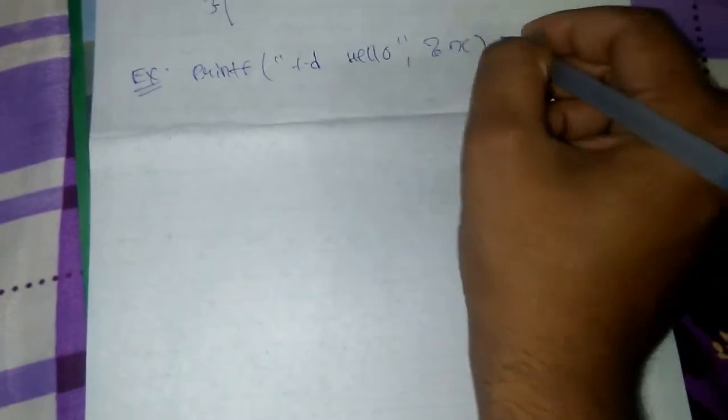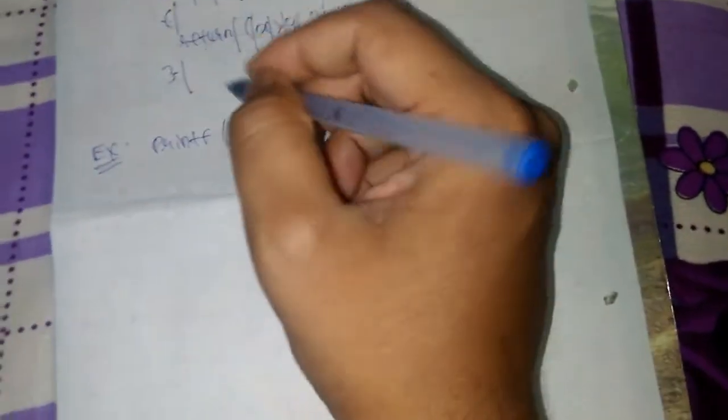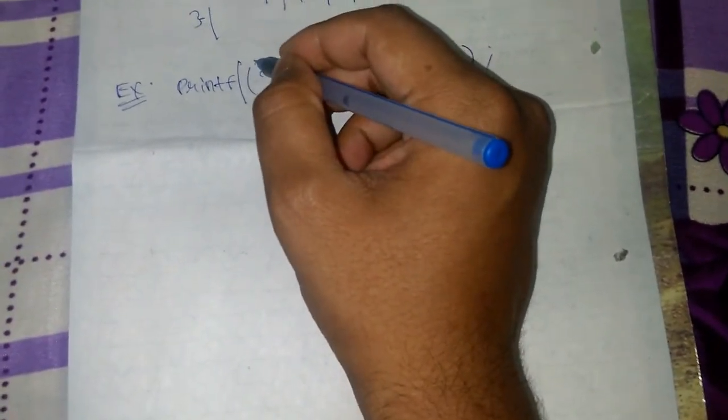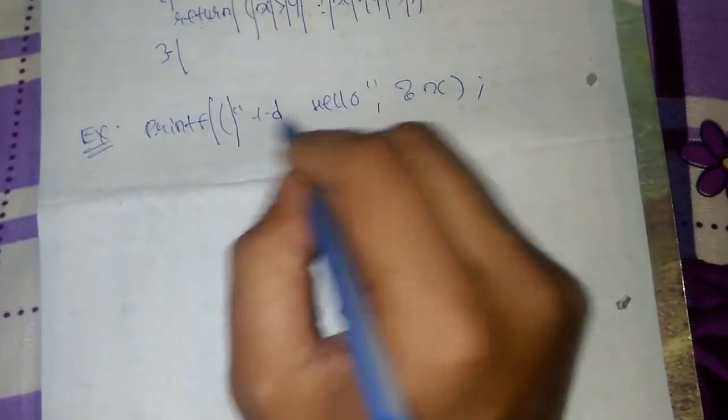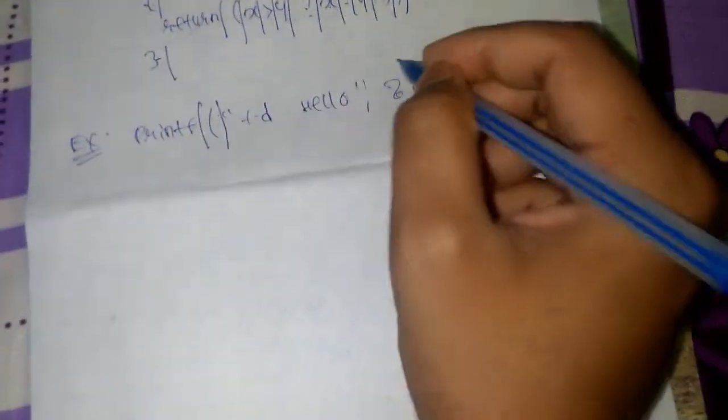Now, what I tell you is that you have to just divide each and every sentence. So printf will be separated, and one more thing: the opening braces will be separated, and whatever is in the double quotation marks will be considered as a single token.